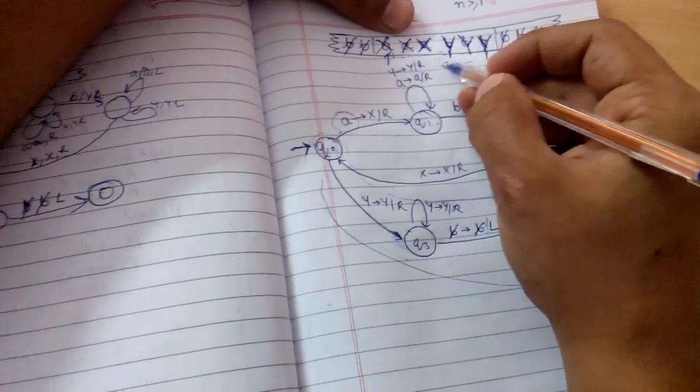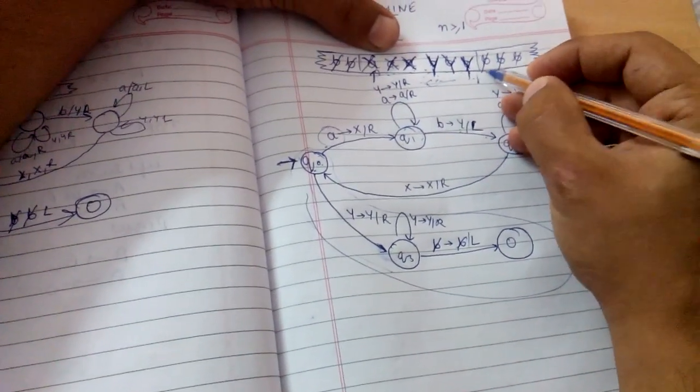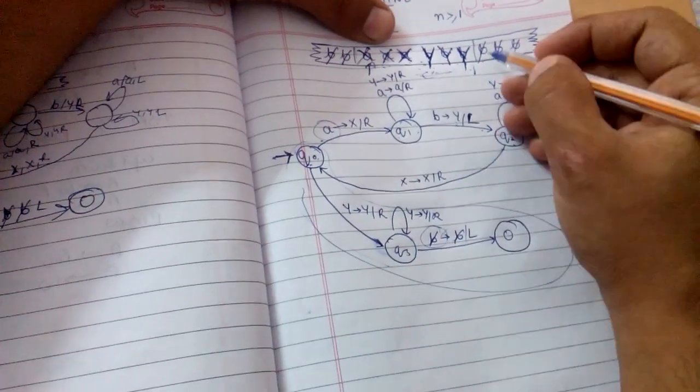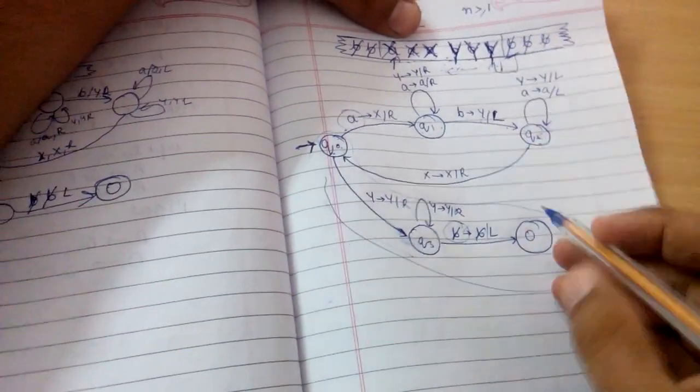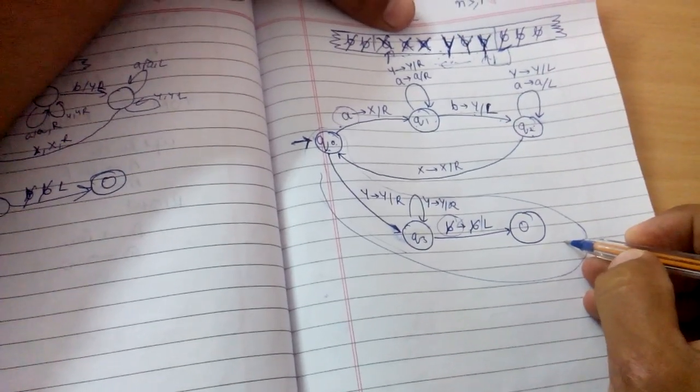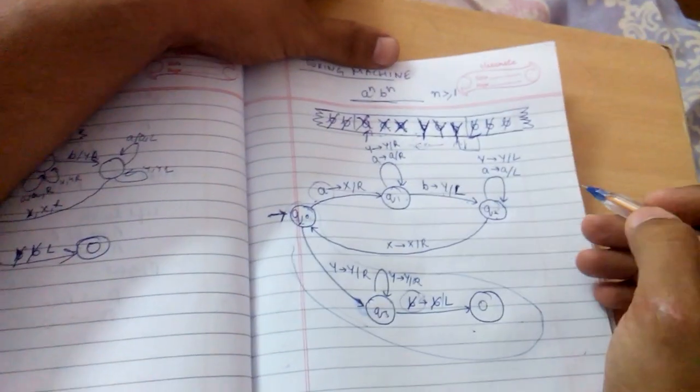We scan the y's, go all the way to the right, and our string ends here because we encounter the blank. We move one step to the left and reach our final state. In this way we have solved the example a^n b^n.